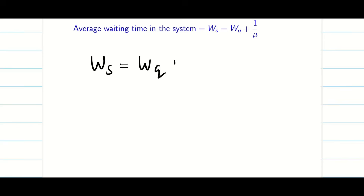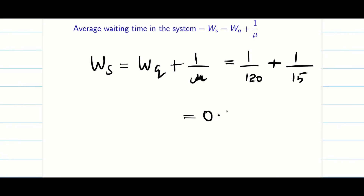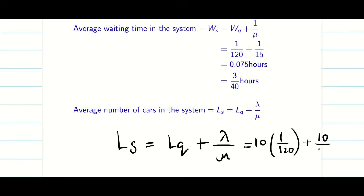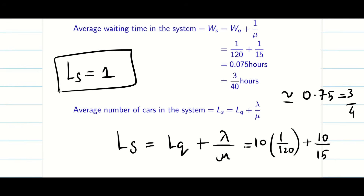Next, ws = wq + 1/μ = 1/120 + 1/15. Simplifying gives ws = 0.075 hours. For ls, we use ls = lq + λ/μ = 1/12 + 10/15 = 3/4 = 0.75. Since the number of cars cannot be a decimal, ls ≈ 1 car in the system on average.